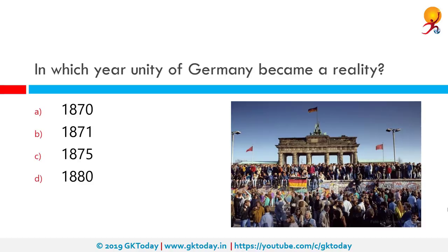In which year did the unity of Germany become a reality? The correct answer is 1871. On 18 January 1871, the King of Prussia was crowned the German Emperor at Versailles.